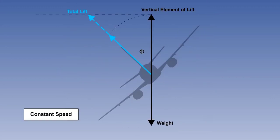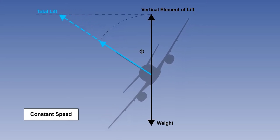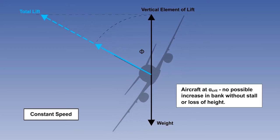If speed is kept constant, but bank is increased, the angle of attack must be increased to provide the further extra lift required. At the stalling or critical angle, no further increase in bank or decrease in radius is possible.